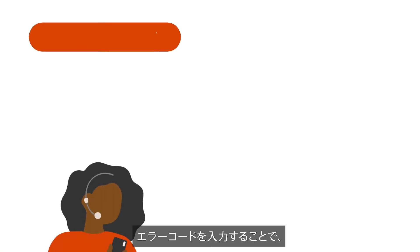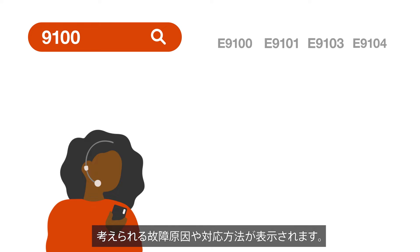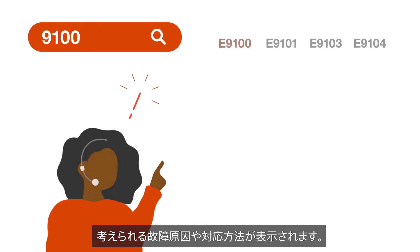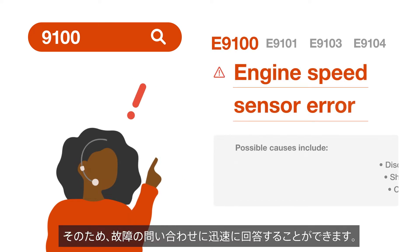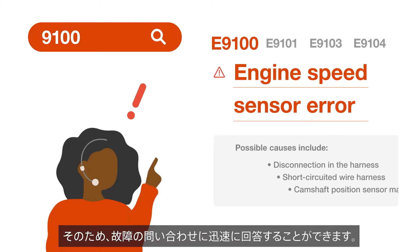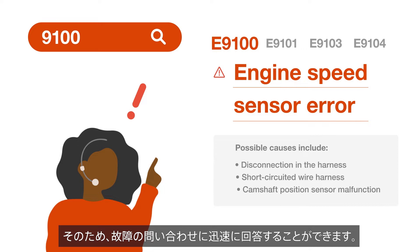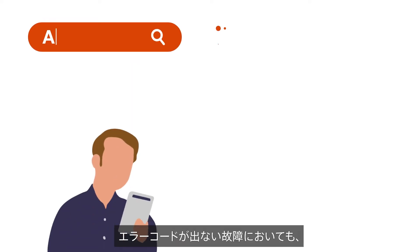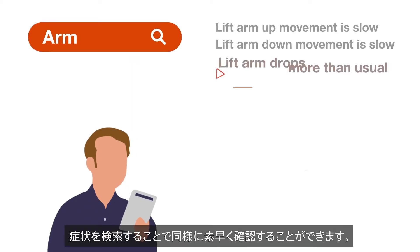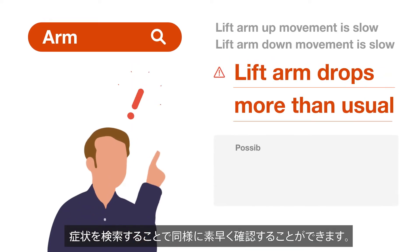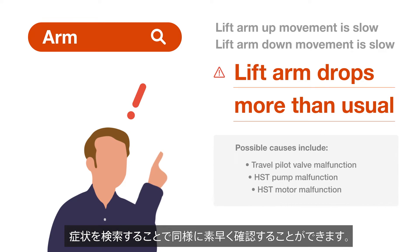Use the app during support calls to instantly search for error codes provided by the customer and quickly respond to downtime inquiries. Even if there aren't error codes, you can search by the symptom the customer describes to quickly see potential causes.